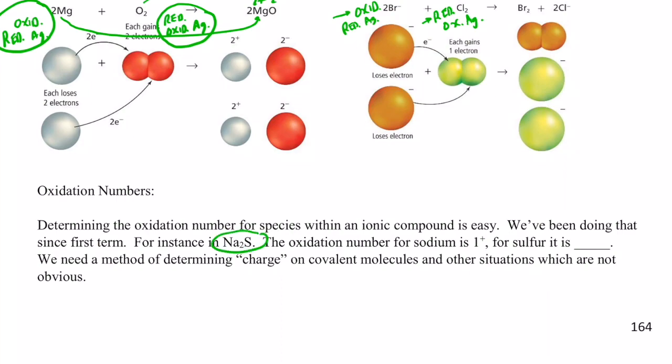It lost an electron. For sulfur, it is negative two. That's right. It has to gain two electrons to attain its noble gas configuration. But, how do we determine the charge or oxidation number on covalent molecules, and other situations which are not so obvious? For instance, how would I find the oxidation number for carbon and oxygen in the compound carbon dioxide?